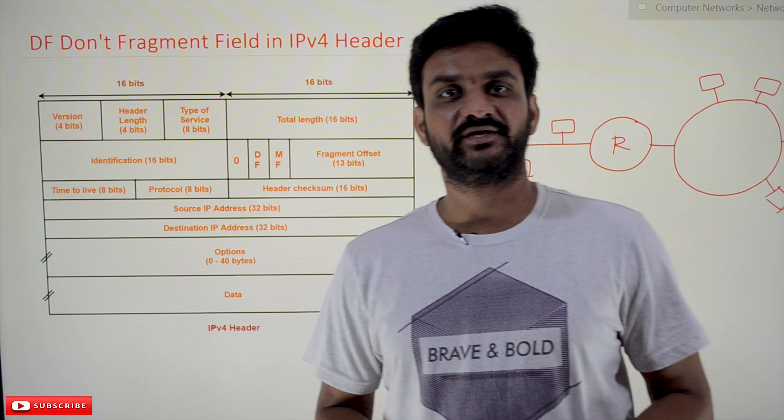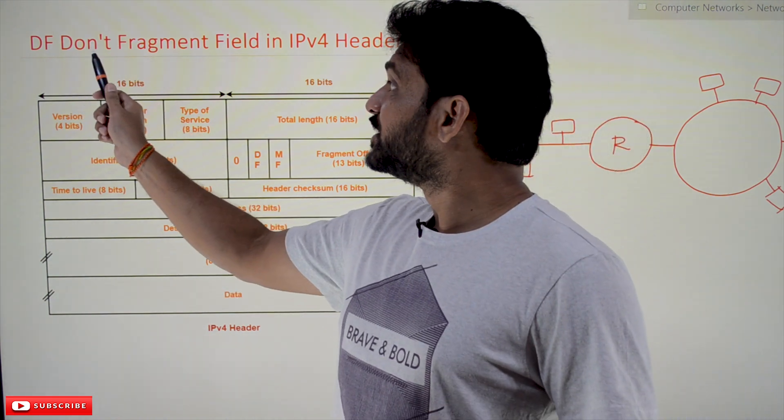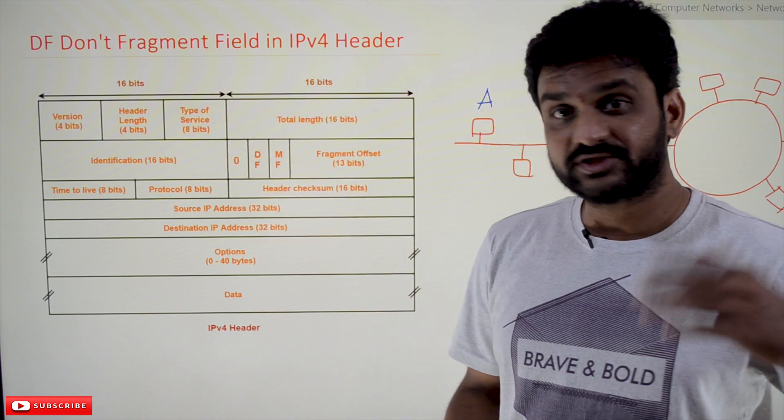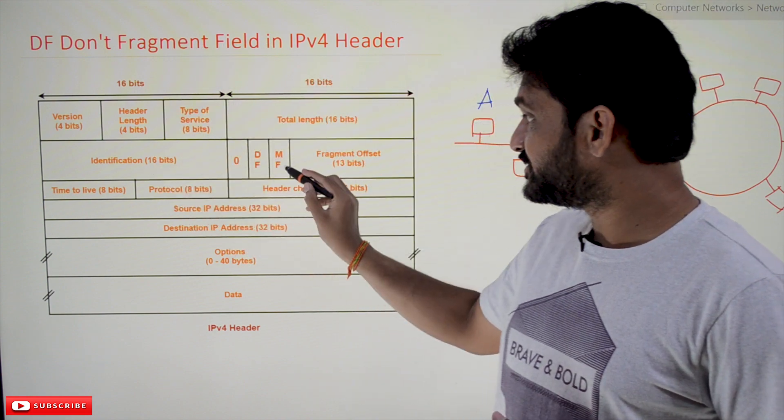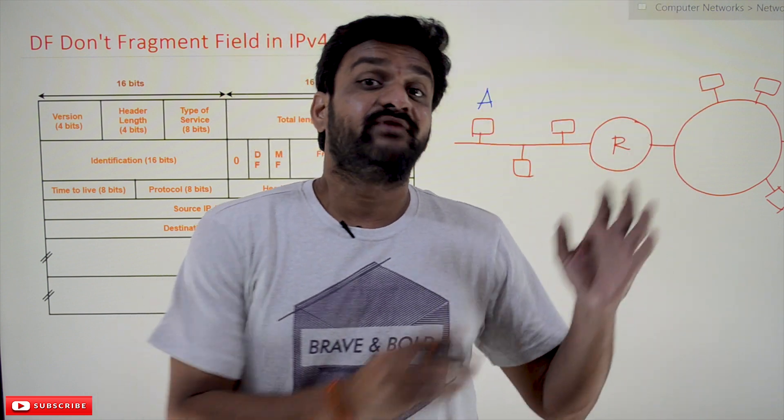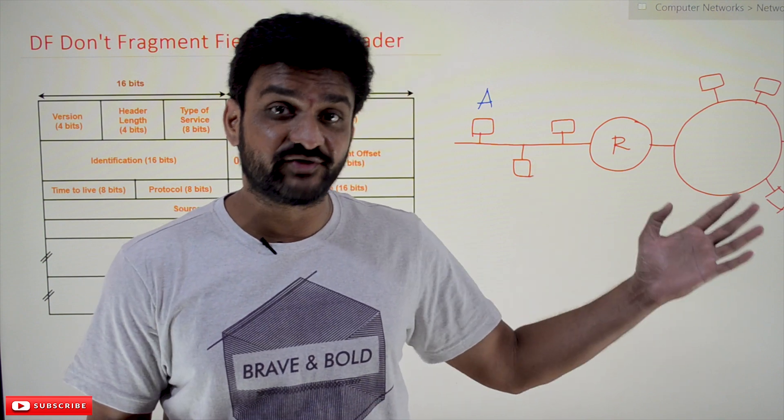Hi, welcome to Learning Monkey. I am Vikram. In this class, we'll try to understand the DF (Don't Fragment) field in the IPv4 header. Concepts like identification, MF, and fragment offset have already been discussed in our previous videos. If you haven't watched those videos, please watch them first, because understanding those concepts is very important for what we're going to discuss in this class.